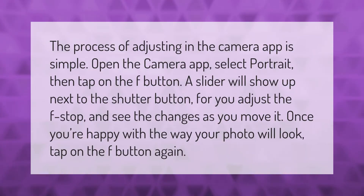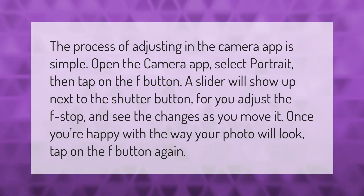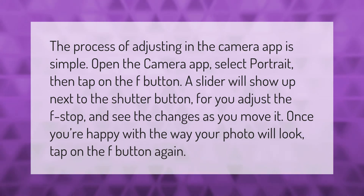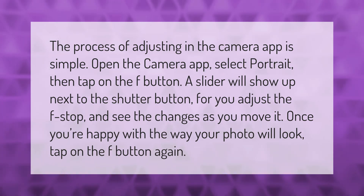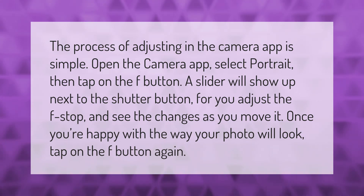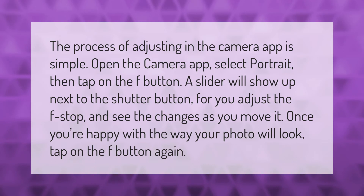The process of adjusting aperture in the camera app is simple. Open the camera app, select Portrait, then tap on the f button. A slider will show up next to the shutter button for you to adjust the f-stop and see the changes as you move it. Once you're happy with the way your photo will look, tap on the f button again.